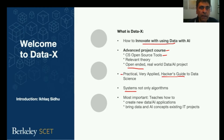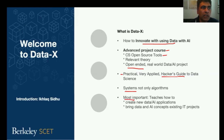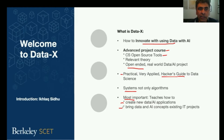Another thing that you'll notice about this class is that it's systems-oriented and not only algorithms-oriented. And that means that in the project, students put together the different components and integrate them together to build a fully working application. Most importantly, what this class teaches is how to either create a new data or AI combination application, or how to bring the concepts of data and AI into existing projects that go on all over the world every day.